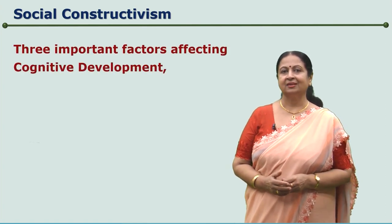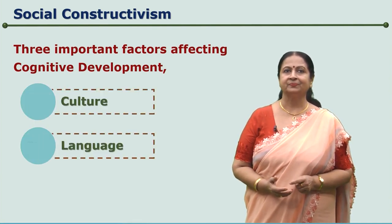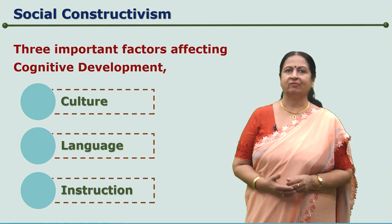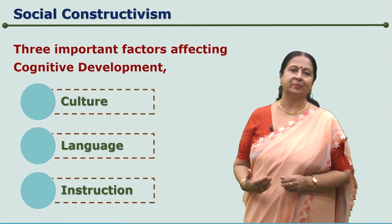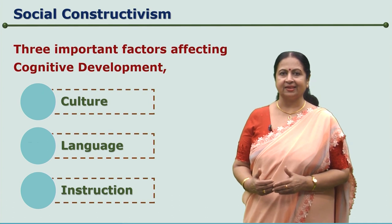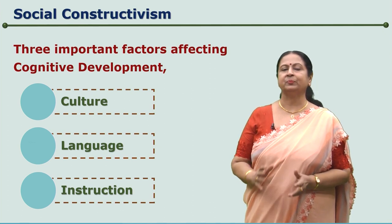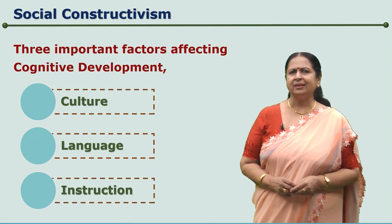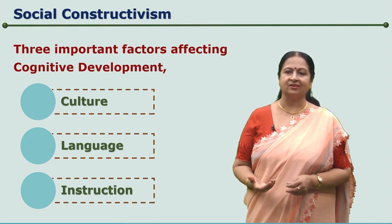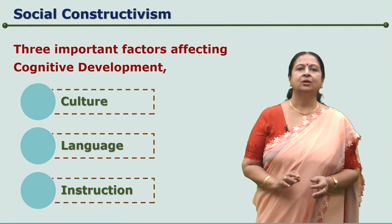The three important factors which affect our cognitive development are culture, language, and instruction. Let us see one by one how culture affects our cognitive development. When an individual grows in a particular cultural setting, his or her experiences will be limited to the exposure that particular culture provides. There are culture-specific terms, abbreviations, and artifacts, and to that extent our experiences and exposure are limited to them.